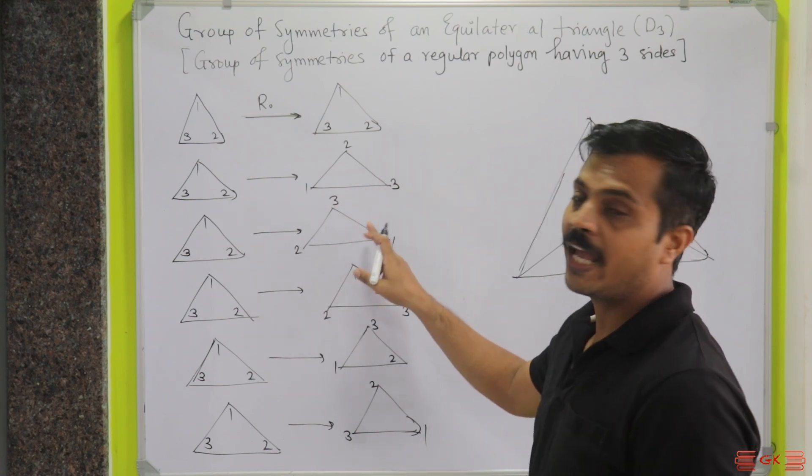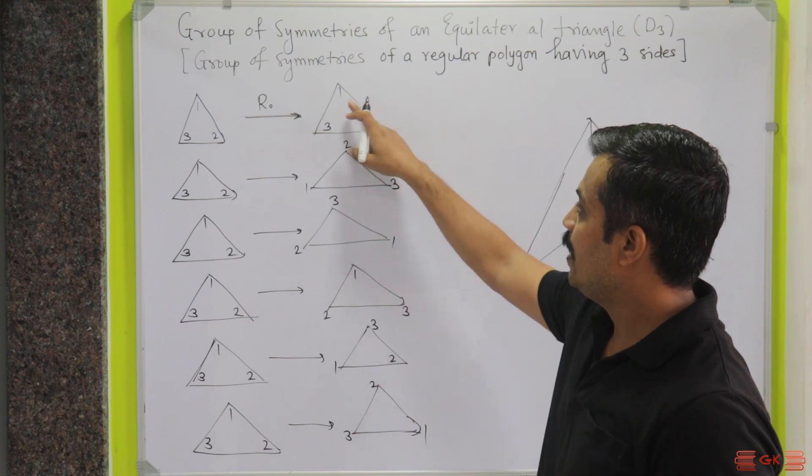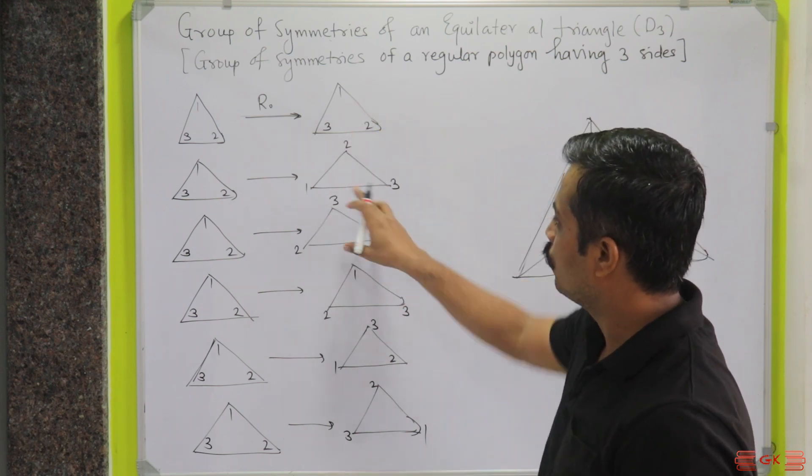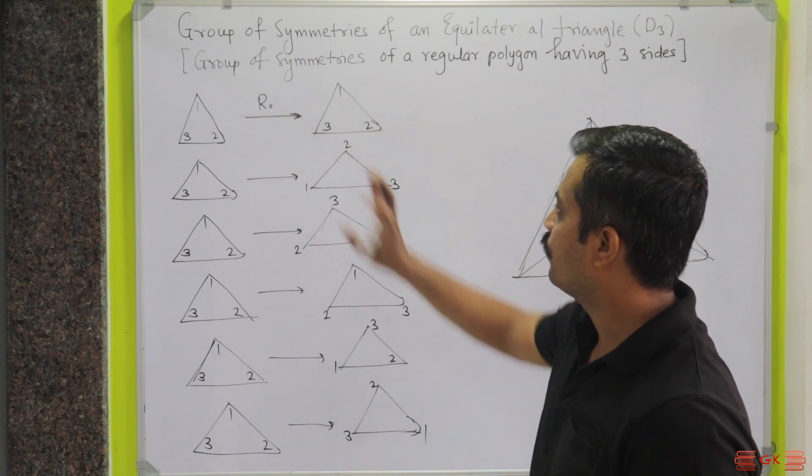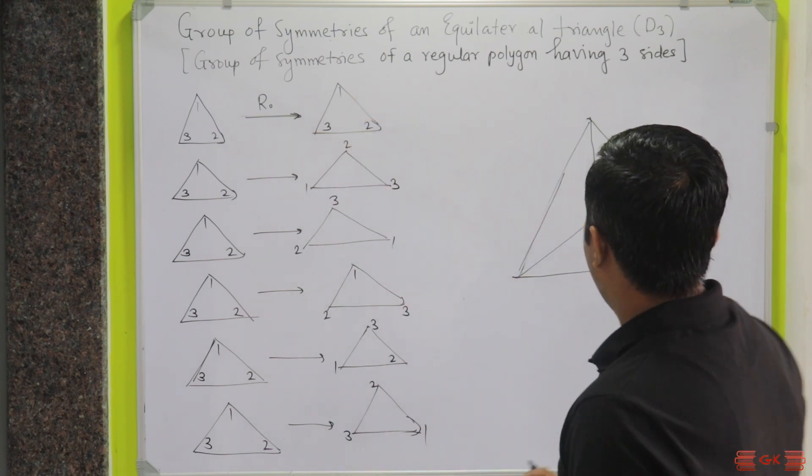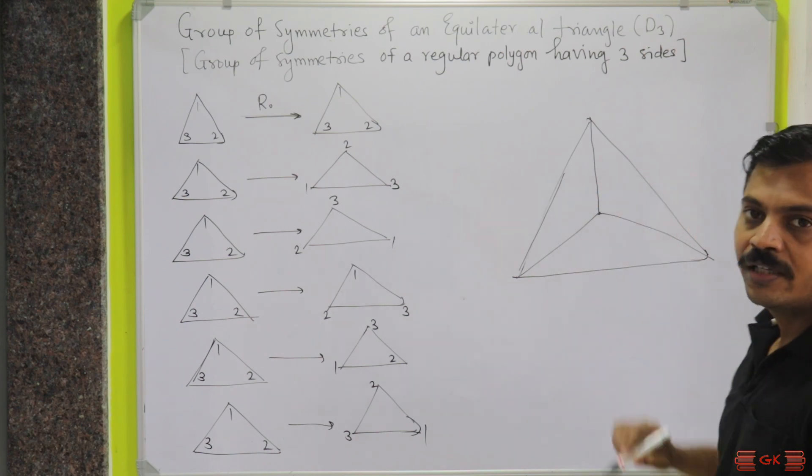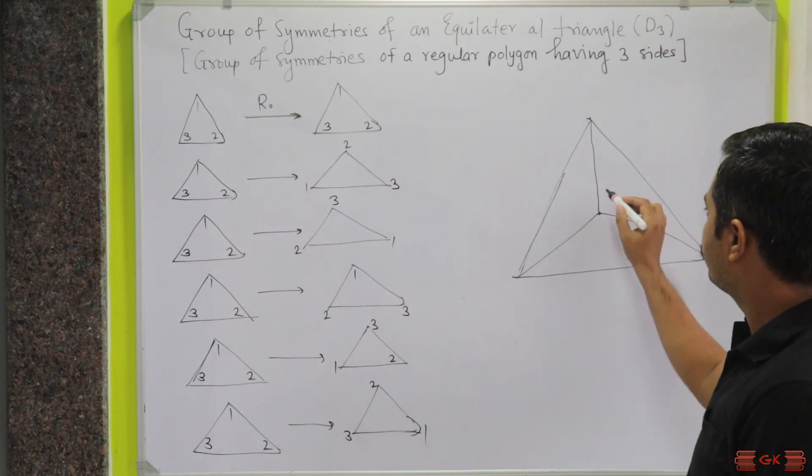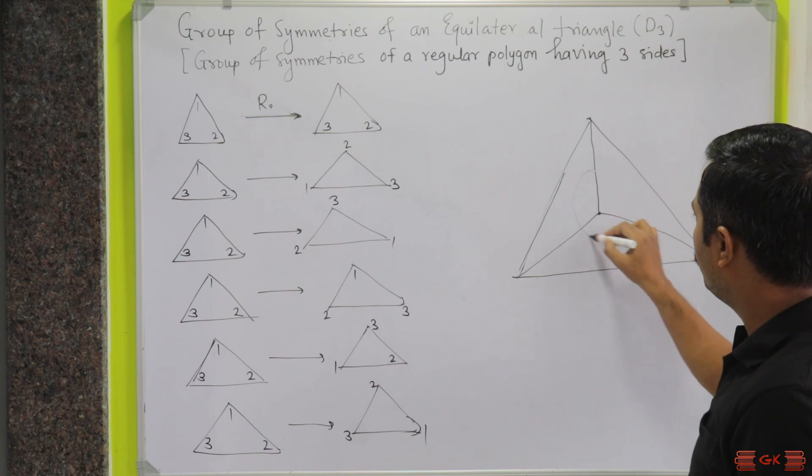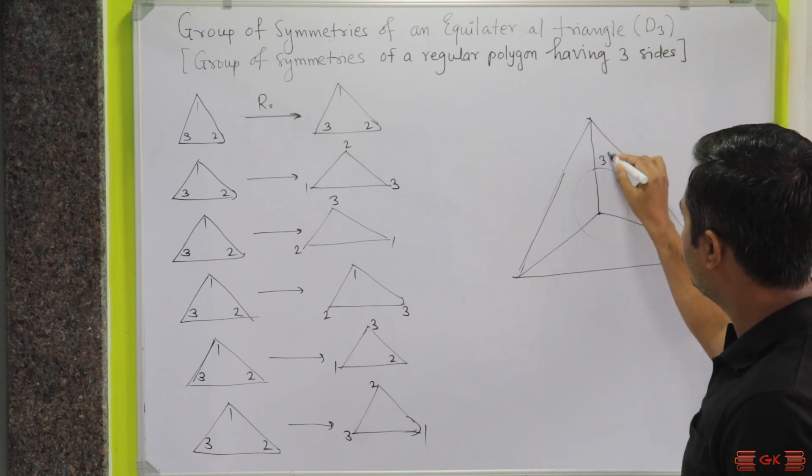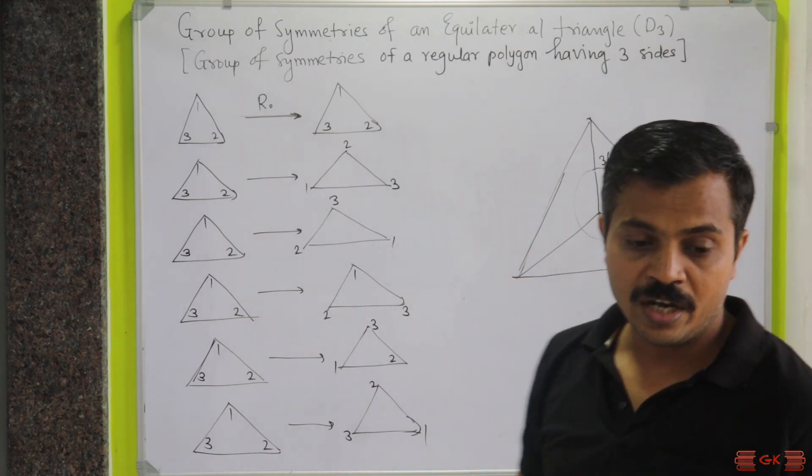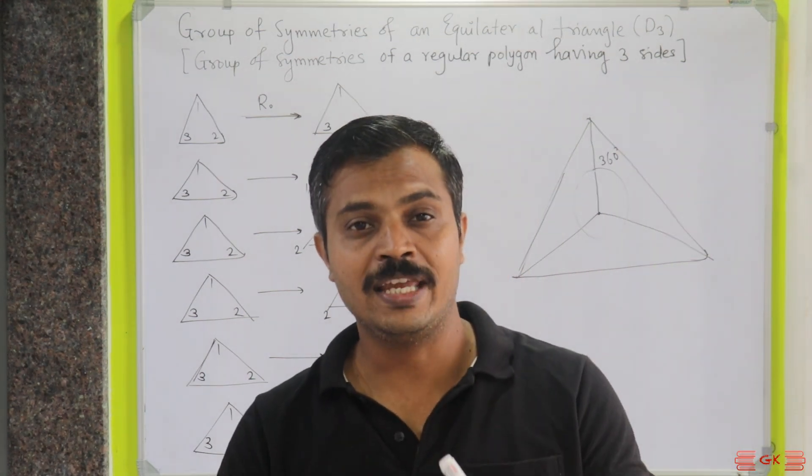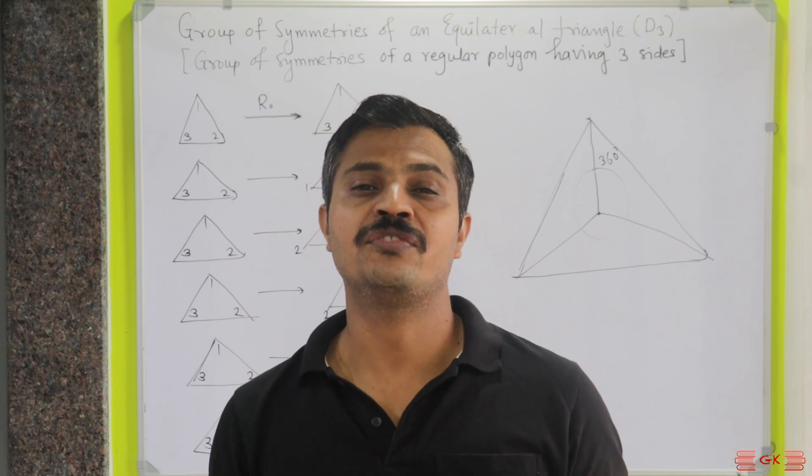Now, if you rotate it one more time, you are going to get the same equilateral triangle back. If you see this equilateral triangle properly, the total comes out to be 360 degrees. Now, as you can see, if we rotate the equilateral triangle three times, we get the original equilateral triangle back.